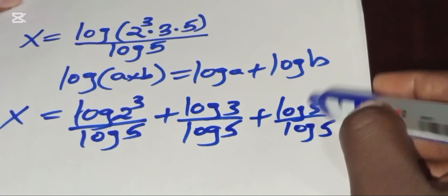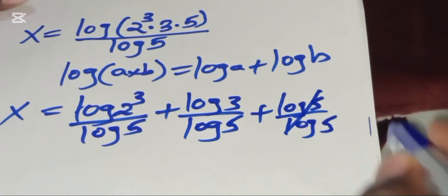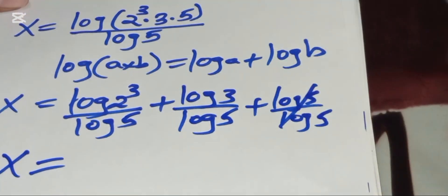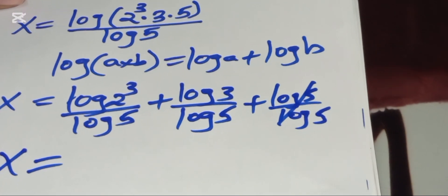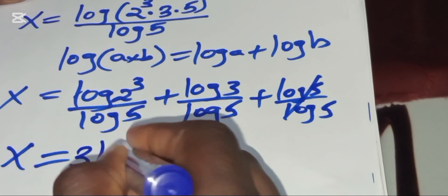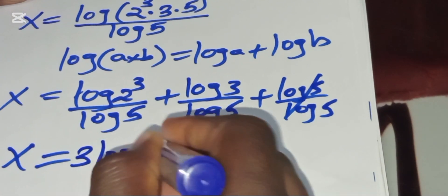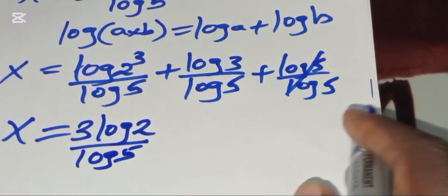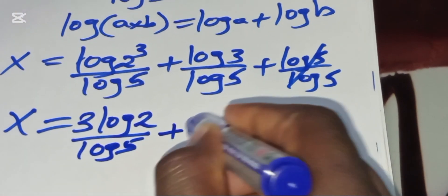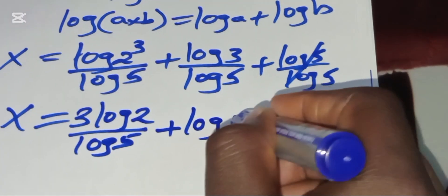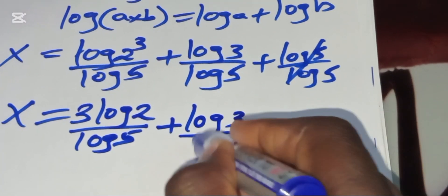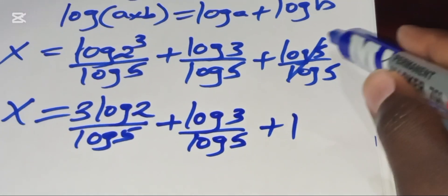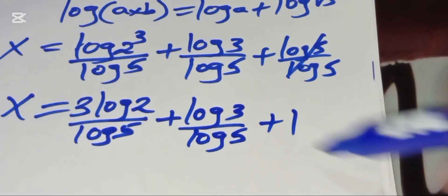Simplifying further: log(2³)/log(5) becomes 3·log(2)/log(5) by the power rule, plus log(3)/log(5), plus 1, since log(5)/log(5) = 1.